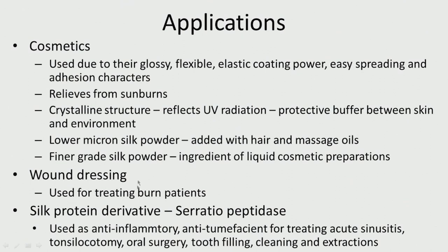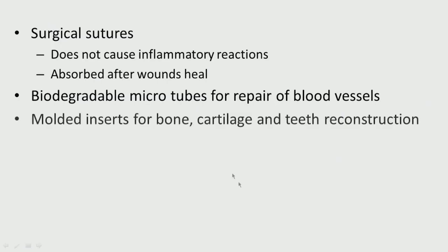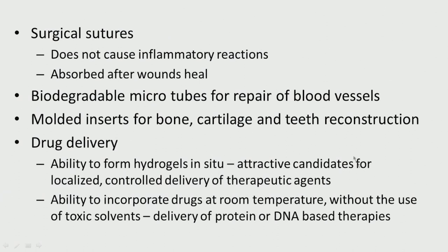Silk can be used for wound dressing in burn patients. Silk protein derivatives like serratiopeptidase are used as anti-inflammatory agents for treating acute sinusitis, tonsillectomy, oral surgery, tooth filling, cleaning, and extraction. Silk is also used for surgical sutures because of its very good tensile properties; it does not cause inflammatory reactions and is bioresorbed after wound healing. Other applications include biodegradable microtubes for repair of blood vessels, molded inserts for bone and cartilage construction, and drug delivery through its ability to form hydrogels in situ — making it an attractive candidate for localized controlled delivery of therapeutic agents, able to incorporate drugs at room temperature without toxic solvents, and enabling delivery of protein or DNA-based therapies.